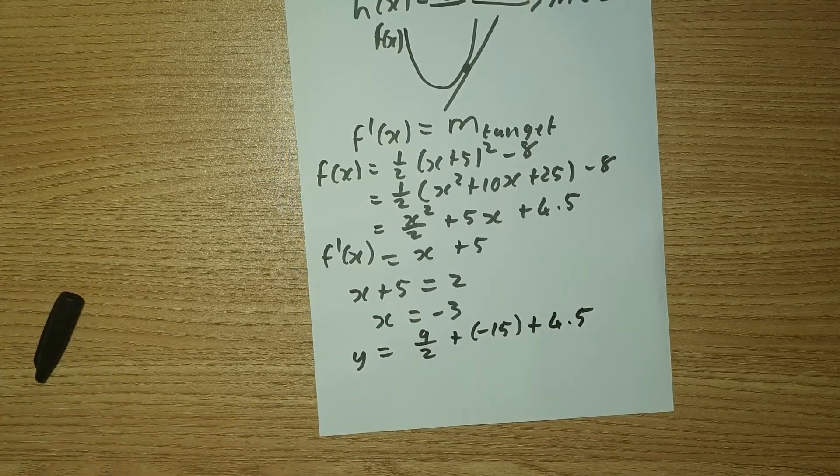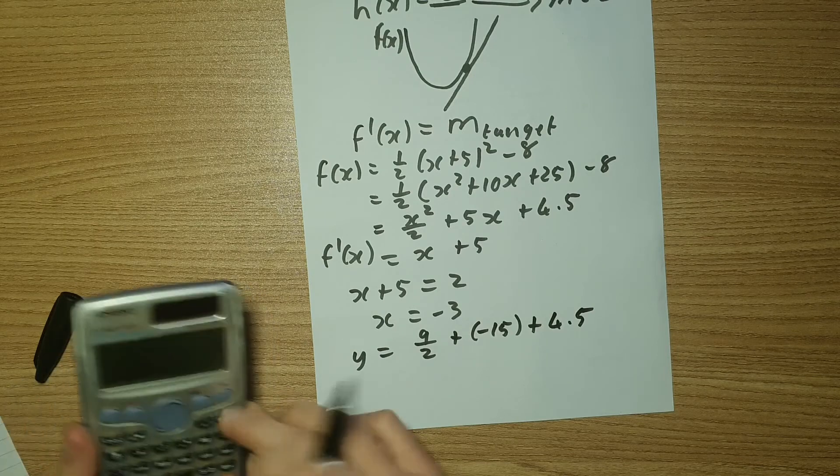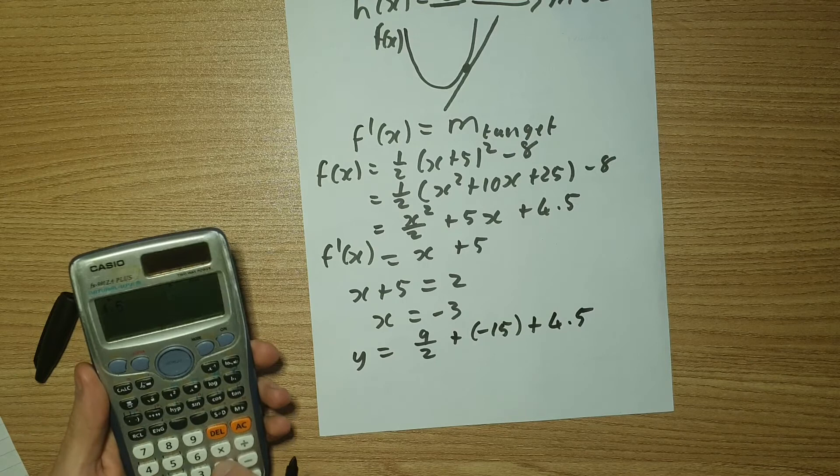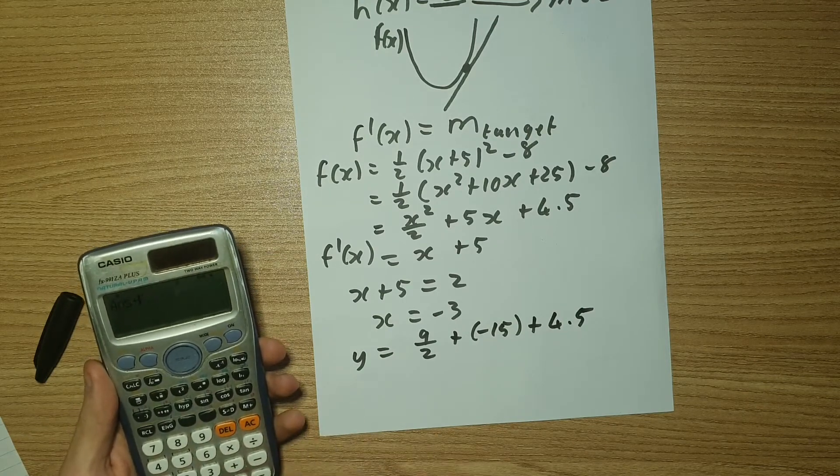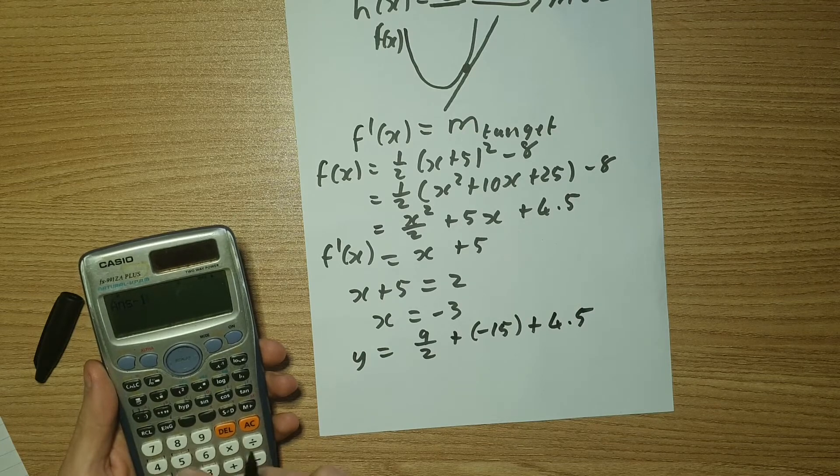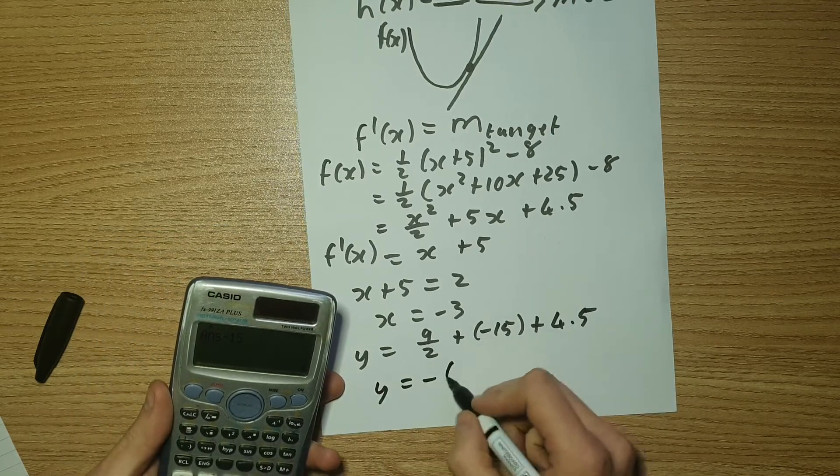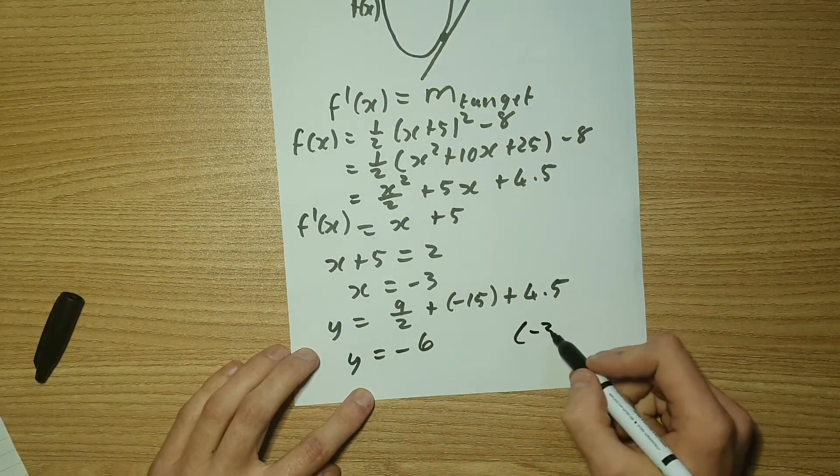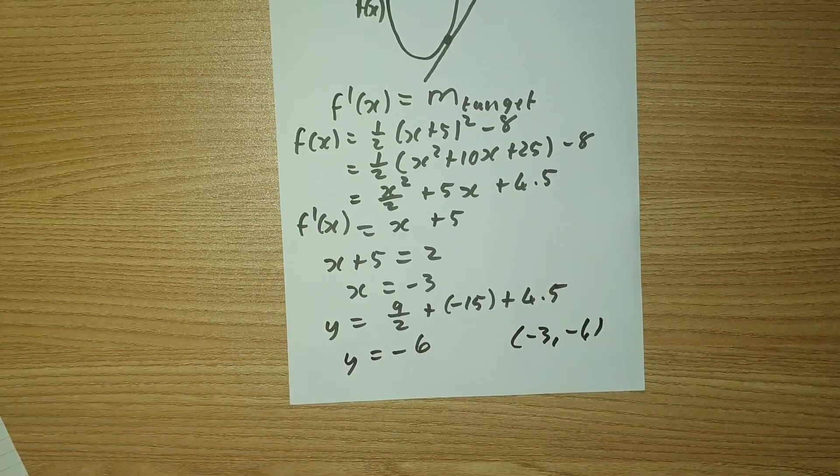So if we sort out all our numbers, just get a calculator, we're going to have 4.5 plus 4.5, that's nine minus 15. And Y will equal to negative six. So the point of intersection is then going to be negative three and negative six. And that's how we do the question.